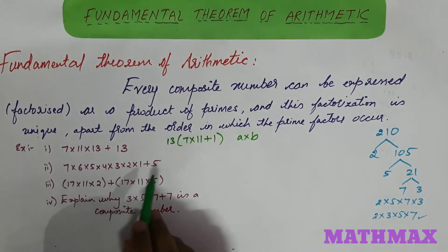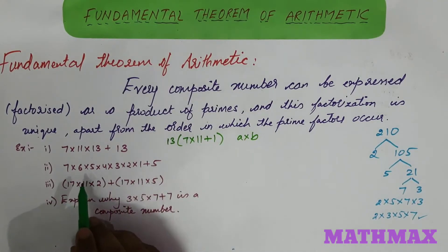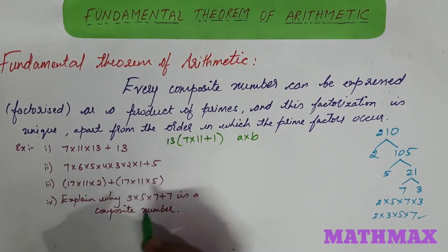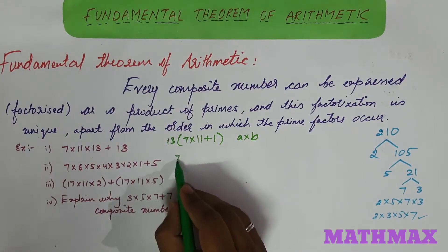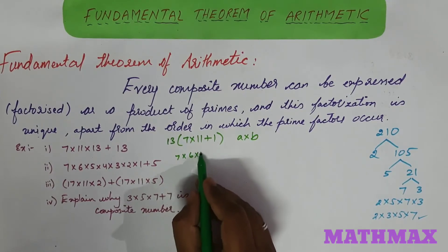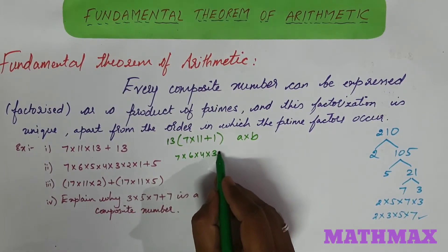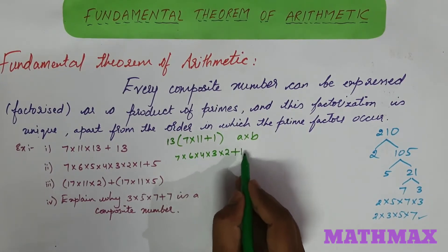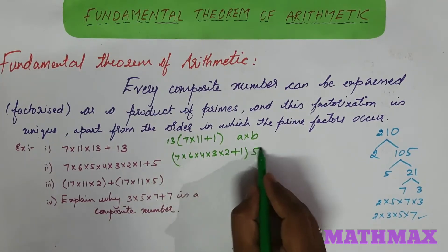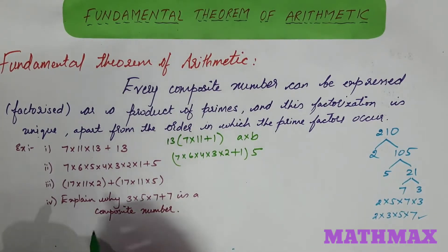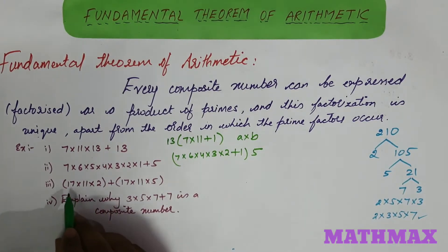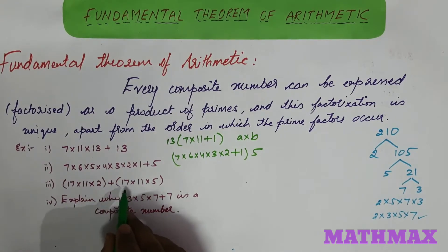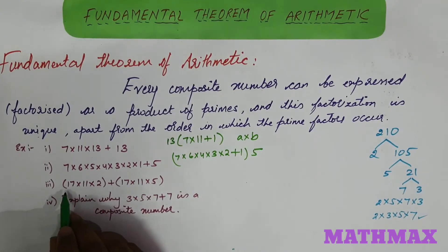In the same way, for the next question, 5 can be taken out as common. So we can write 5 into (7 into 6 into 4 into 3 into 2 plus 1), which again gives us a product of two numbers confirming it is a composite number.